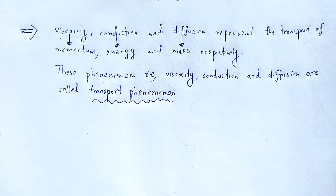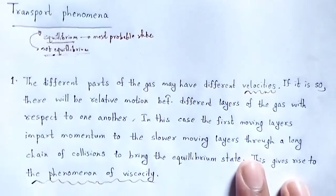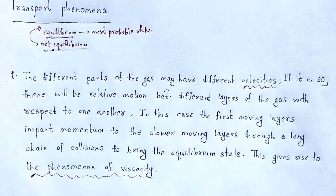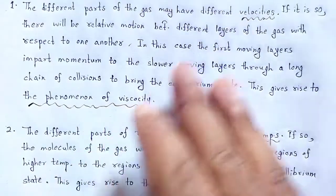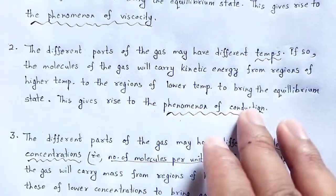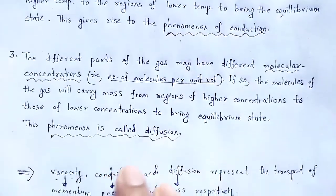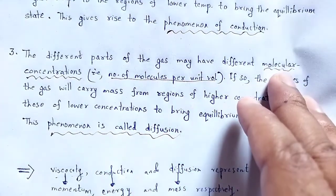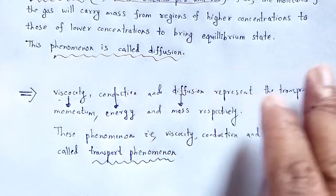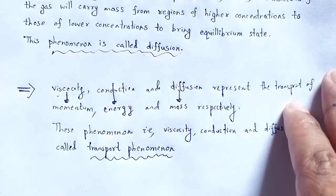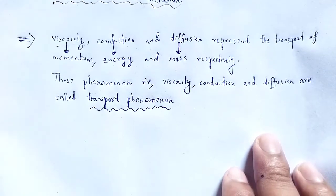With the help of this video lecture, we understand what transport phenomena exactly means — how a non-equilibrium state is converted to an equilibrium state by following various steps. According to those steps, the phenomena are named: first, the phenomenon of viscosity due to difference in velocities; second, the phenomenon of conduction due to difference in temperatures; third, the phenomenon of diffusion due to difference in molecular concentration. This is all about transport phenomena. With these useful and informative notes, let me wind up. Thank you.